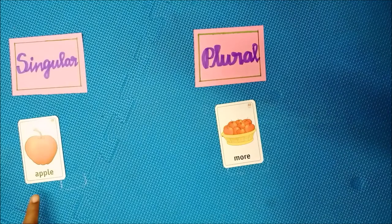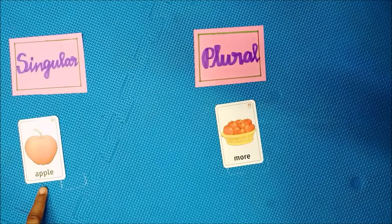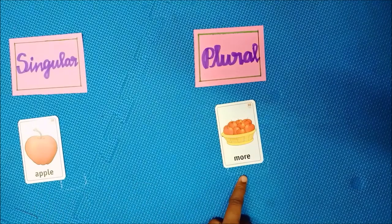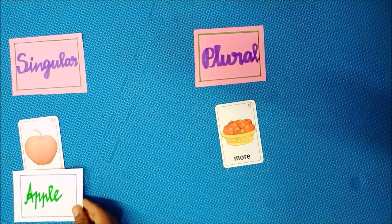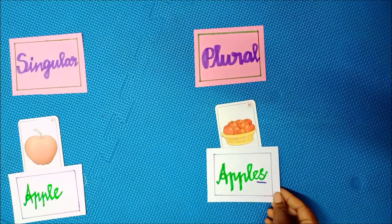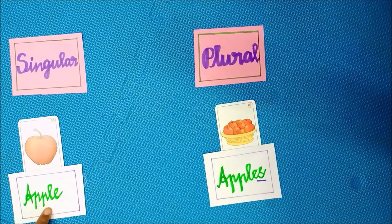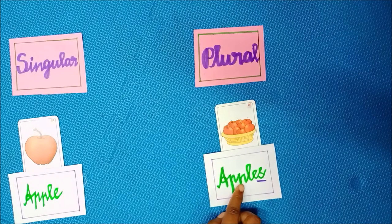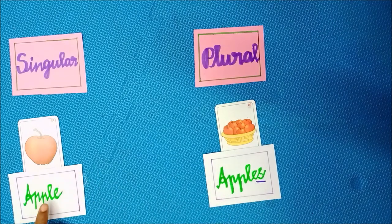Next, it is an apple — only one apple, so it is singular. Here I have more apples, so it is plural. The plural form of apple is apples, A-P-P-L-E-S.